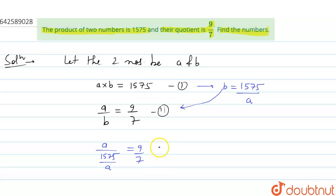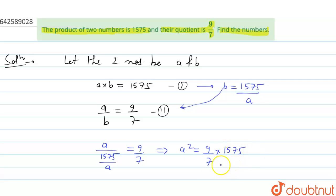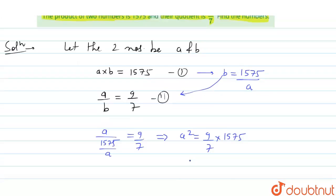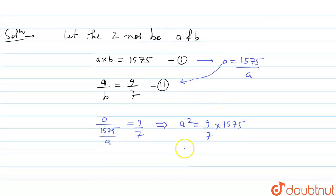This gives us a squared equals 9 by 7 multiplied by 1575. Upon simplification, a squared equals 9 multiplied by 225.